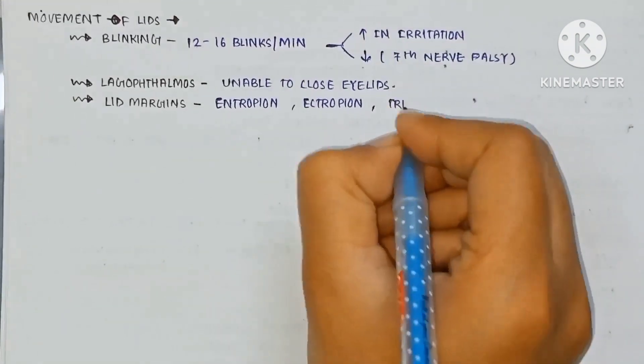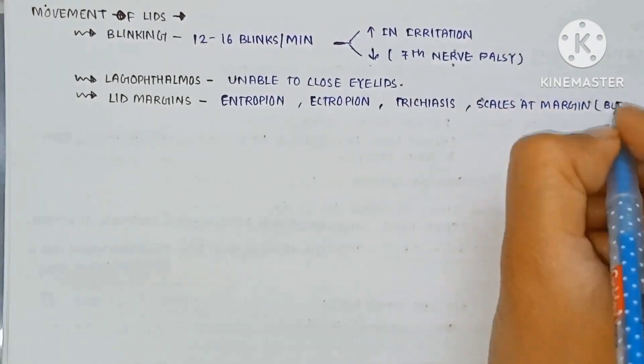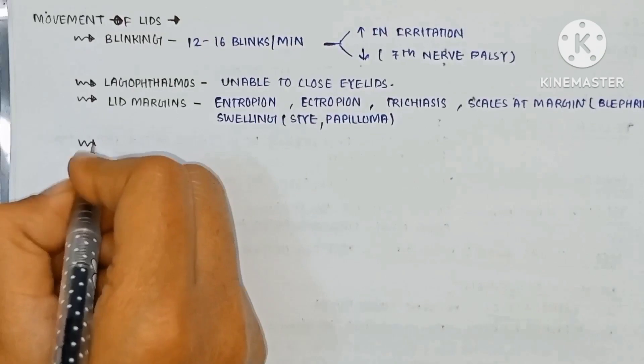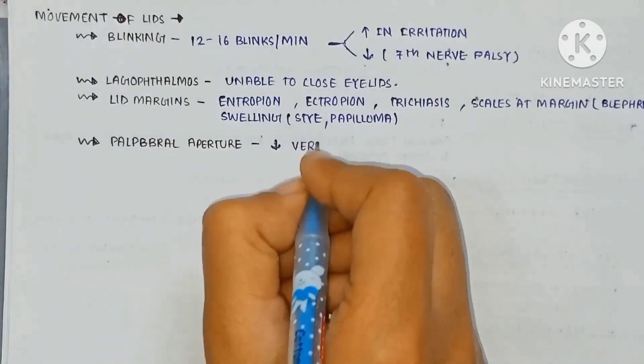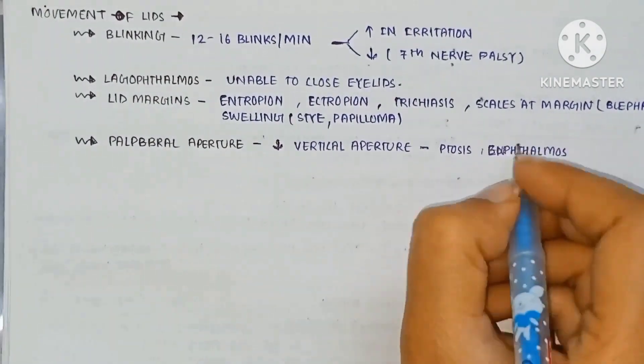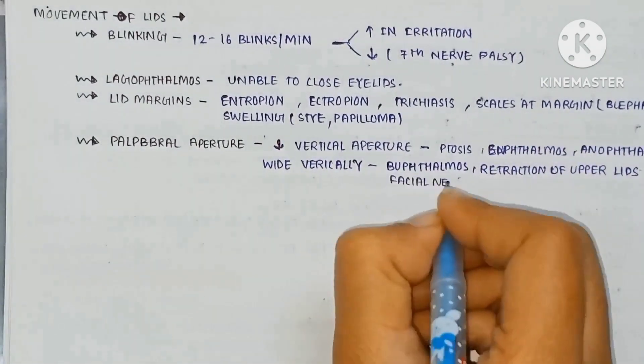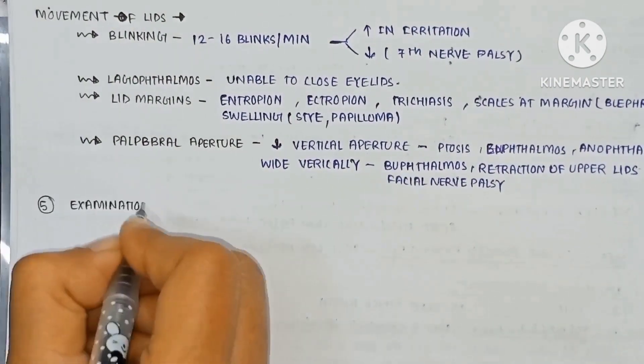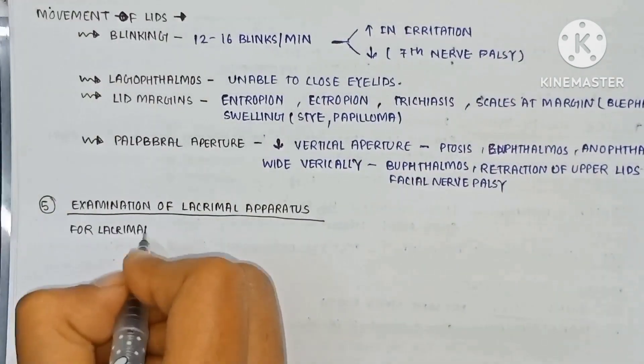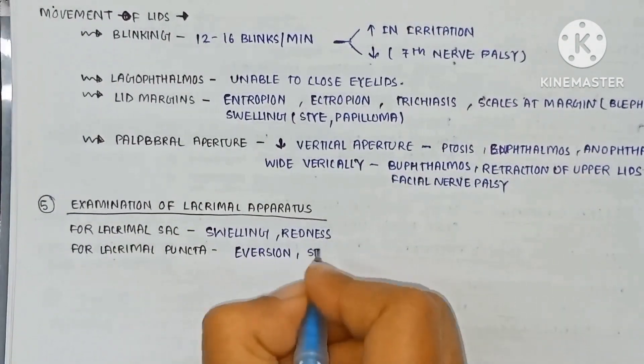Lid margins may be entropion, ectropion, trichiasis, scales at the margin which is in blepharitis and swelling in stye and papilloma. The palpebral aperture which is decreased vertical aperture in ptosis, microphthalmos and anophthalmos. Wide vertically with exophthalmos, retraction of eyelid and facial palsy.